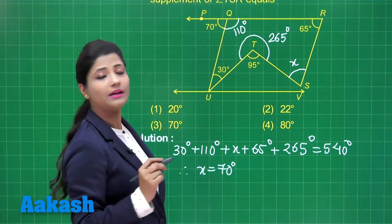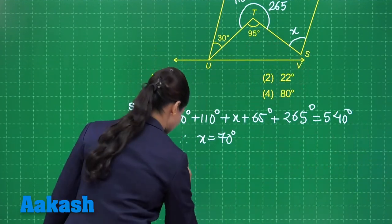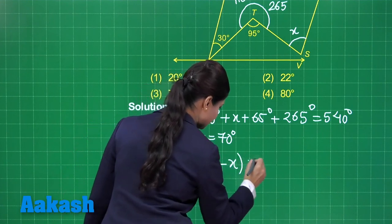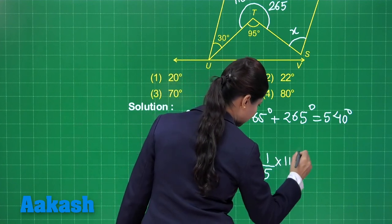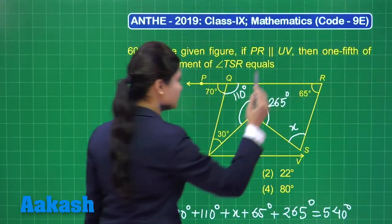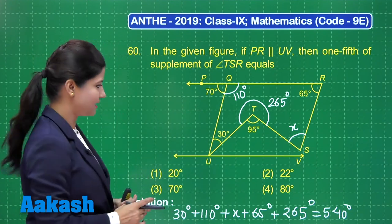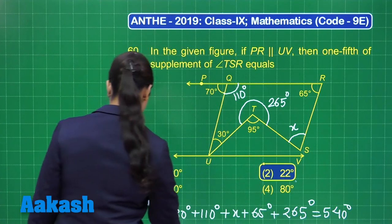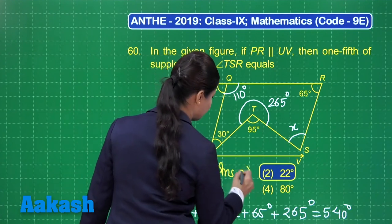With x obtained as 70 degrees, we need one-fifth of the supplement of x. The supplement is 180 degrees minus 70 degrees, which is 110 degrees. One-fifth of 110 degrees equals 22 degrees. So the required answer for this question is option 2.